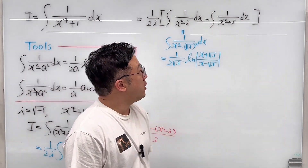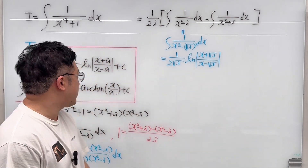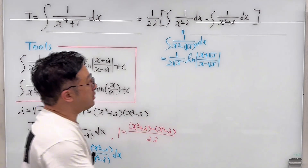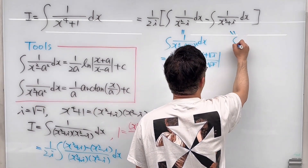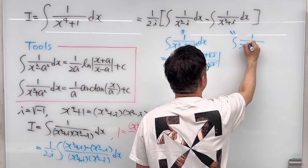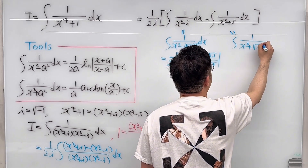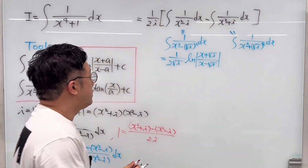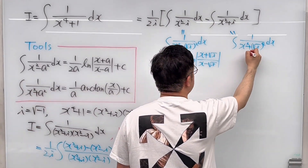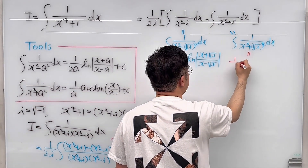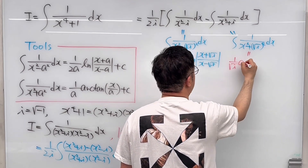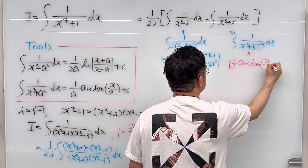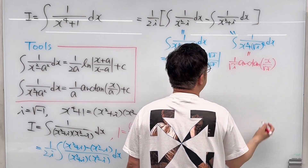The second integral is 1 over (x² + i) dx, which uses the second tool. We rewrite it as 1 over x² plus (√i)² dx, which gives us 1 over √i times arctan of x over √i, plus C.